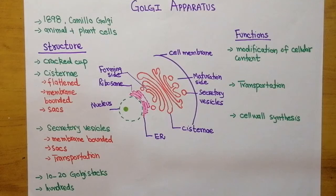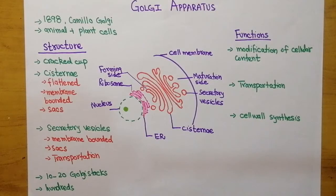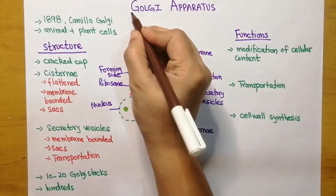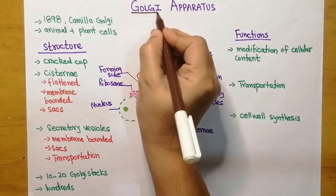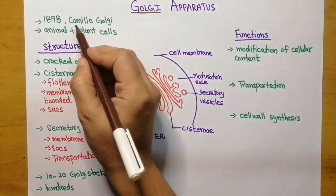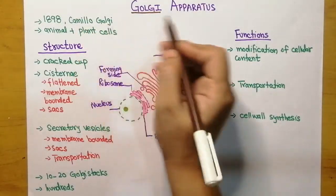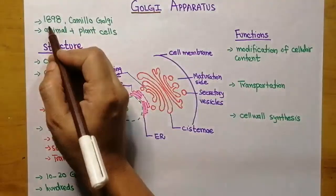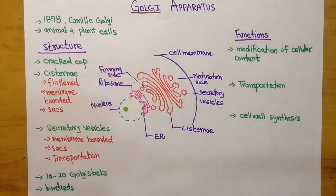Hey learners, welcome back to Ahmad Coaching. This is your teacher Dr. Anam. Today we are going to study about the Golgi apparatus. Golgi is actually the name of the scientist who discovered the Golgi apparatus. His name was Camillo Golgi and he discovered the Golgi apparatus in 1898.